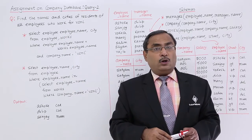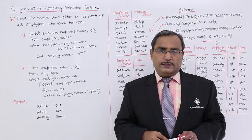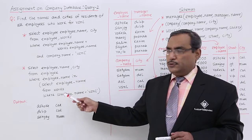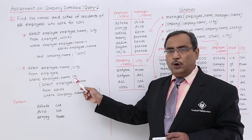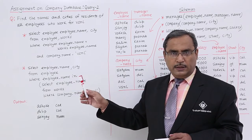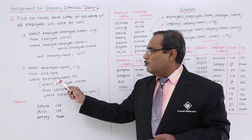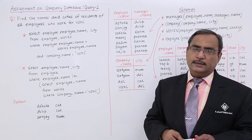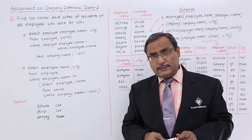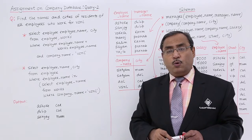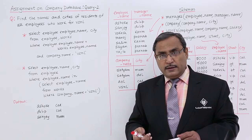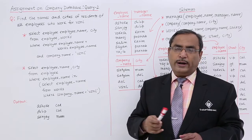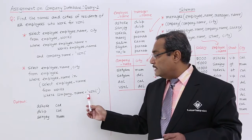This query can also be done using nested subqueries. There is one inner query which will produce some temporary table in memory on which the outer query will work. The query in that case is: SELECT employee_name, city FROM employee WHERE employee_name IN (SELECT employee_name FROM works WHERE company_name = 'VSNL').